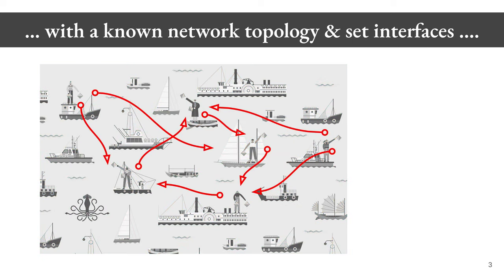Moreover, assume that this distributed system has a known network topology and set interfaces. When I say topology, I do not mean it in the mathematical sense, but rather in the standard network science sense. Effectively, there are only certain boats that can talk to certain other boats. So each boat or ship has a communicator of some sort on it, waving semaphores around — classical flags used to communicate in the harbor. There might be some rules of who can communicate with who. For instance, maybe a boat can only communicate with another boat if they're sufficiently close to one another geographically, or if they are part of the same armada.